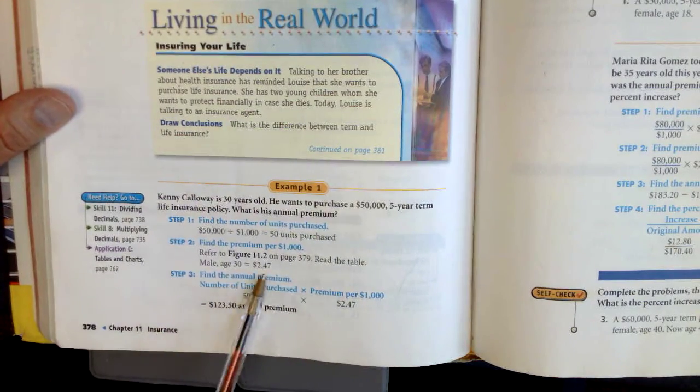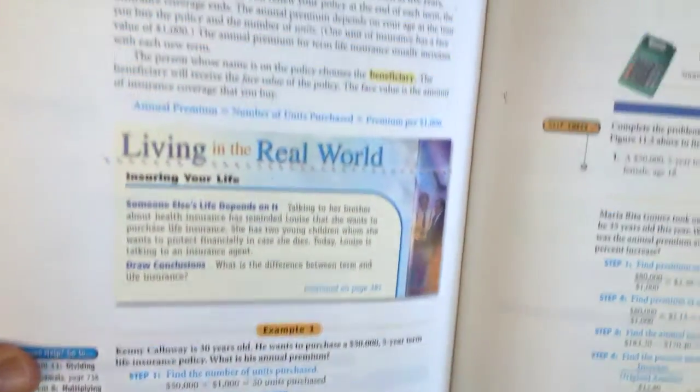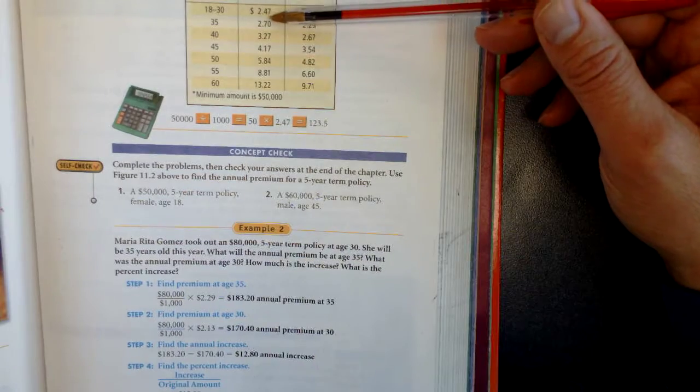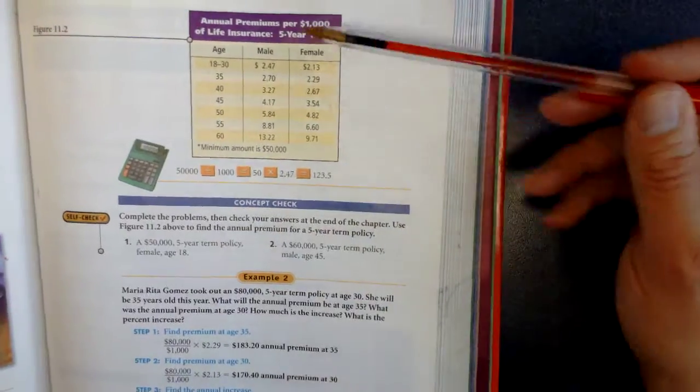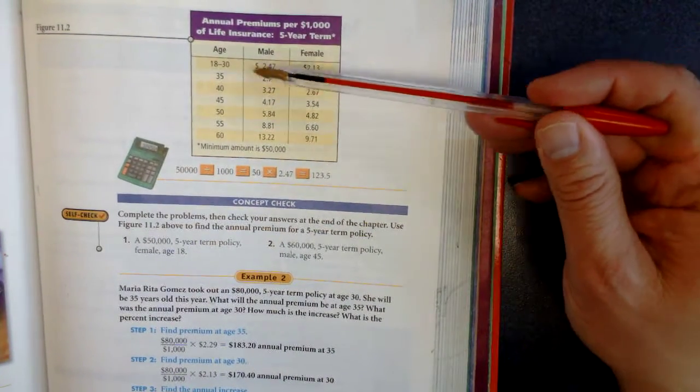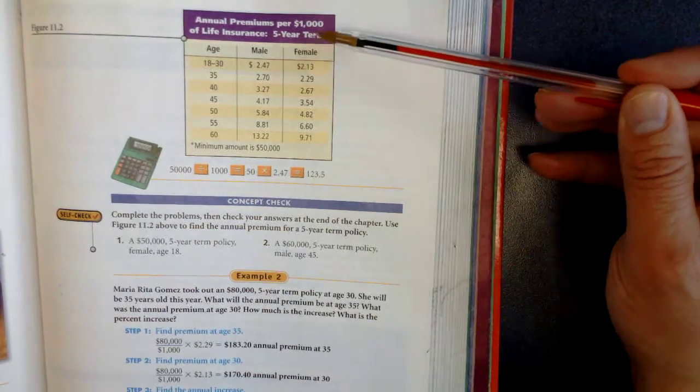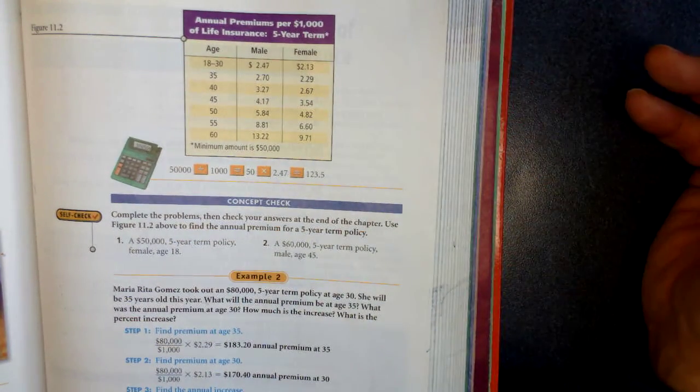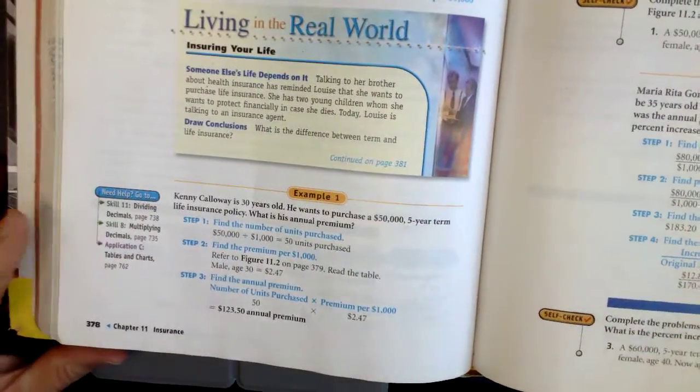Step two, we're gonna find his premium per $1,000. He's a male, aged 30. If I go back to the chart, a male down to age 30 would be $2.47. He's a male, 30 years old, fits into the 18 to 30 category. That's $2.47 per $1,000 of term life insurance. Now he's getting $50,000 of life insurance. So the number we get here, we're gonna have to multiply by 50.